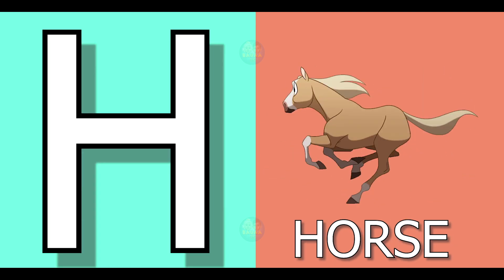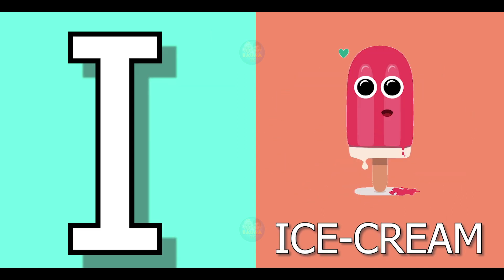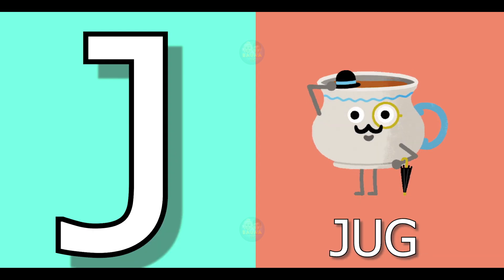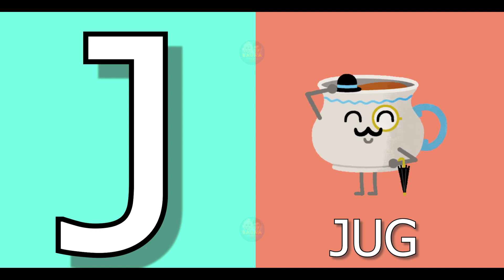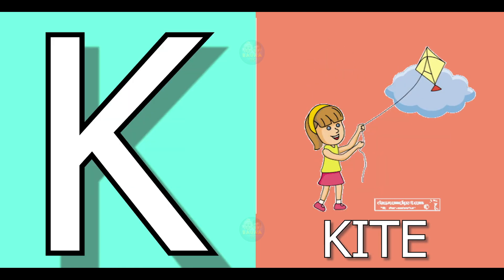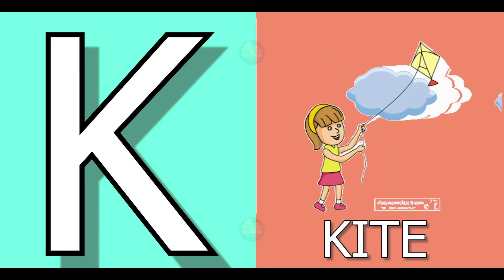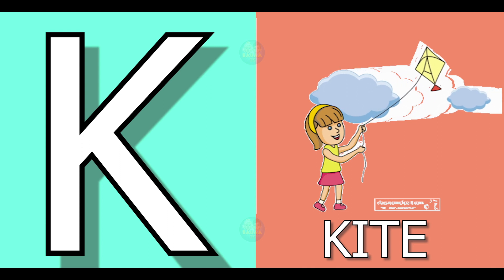H for horse, horse means ghoda. I for ice cream, ice cream means ice cream. J for jag, jag means jag. K for kite, kite means patang.